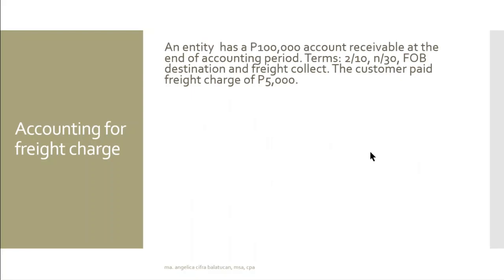How do we account for the freight charge? Sometimes goods are sold FOB destination but shipped as freight collect, with the understanding that the buyer will pay for the freight charge and deduct the same when remittance is made. On the part of the seller, the freight charge is recorded by debiting freight out and crediting allowance for freight charge.